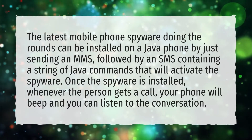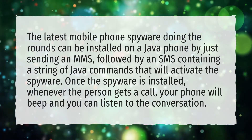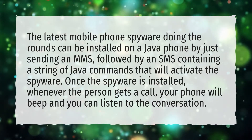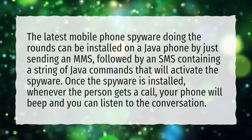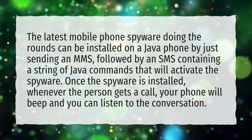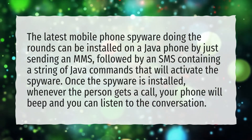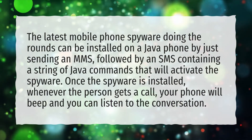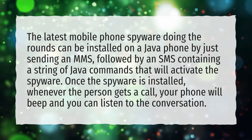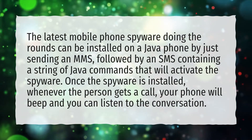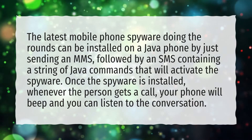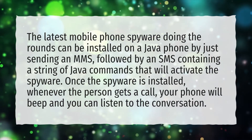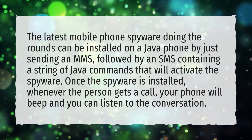The latest mobile phone spyware doing the rounds can be installed on a Java phone by just sending an MMS, followed by an SMS containing a string of Java commands that will activate the spyware. Once the spyware is installed, whenever the person gets a call, your phone will beep and you can listen to the conversation.